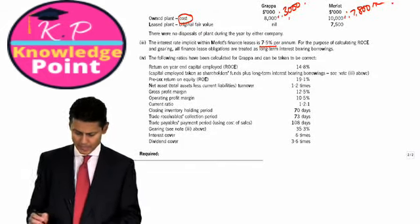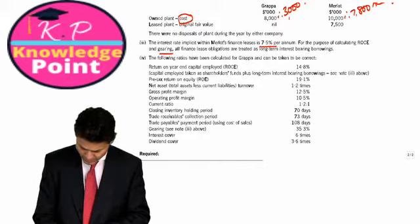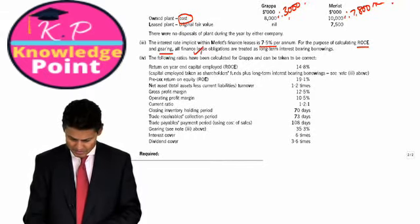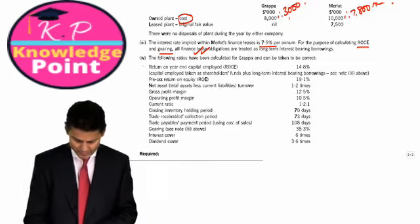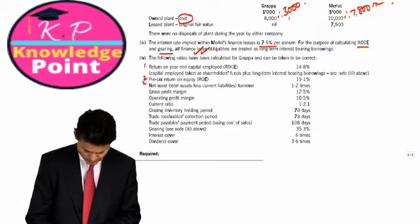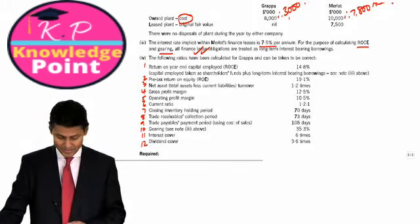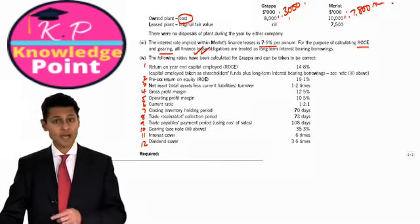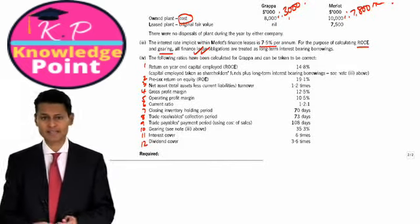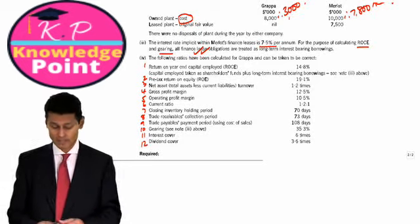For the purpose of calculating ROC and gearing, all finance lease obligations are treated as long-term interest-bearing borrowings. So that's quite important. The following ratios have been calculated for Grappa and can be taken to be correct. I did say to Steve Scott, the examiner, wasn't it a bit mean to have 12 ratios for 8 marks? He says, don't worry about it. Some will be 1.5 marks. Where it requires a bit more care and workings, he'll give 1.5 marks. Where it's something very much more obvious, he'll give half a mark. He assured me that it will be fair.